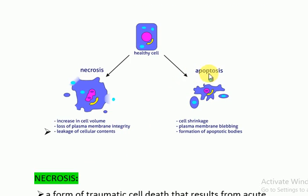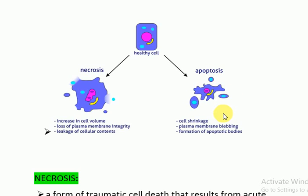Looking at the image: that is a normal healthy cell. When apoptosis occurs, first there is cell shrinkage, then the plasma membrane remains intact and there is blebbing. After the blebbing, apoptotic bodies are formed. These apoptotic bodies are then phagocytosed without any inflammatory reaction occurring.